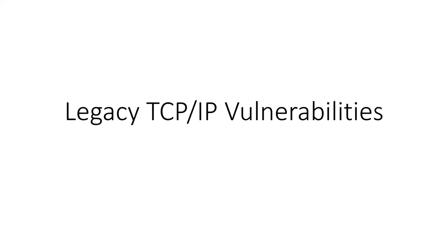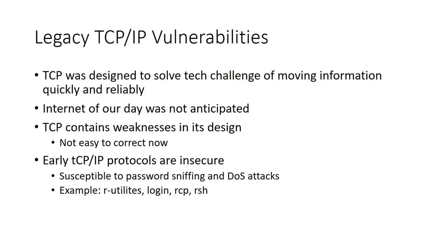At TCP there are a number of legacy vulnerabilities that we should consider. TCP was originally designed to solve the challenge of getting information from point A to point B — reliability and quickly. It wasn't designed with security in the forefront, so the internet we see today is not what the creator of TCP/IP anticipated. That's why TCP/IP comes with a number of legacy vulnerabilities inherent in its design.